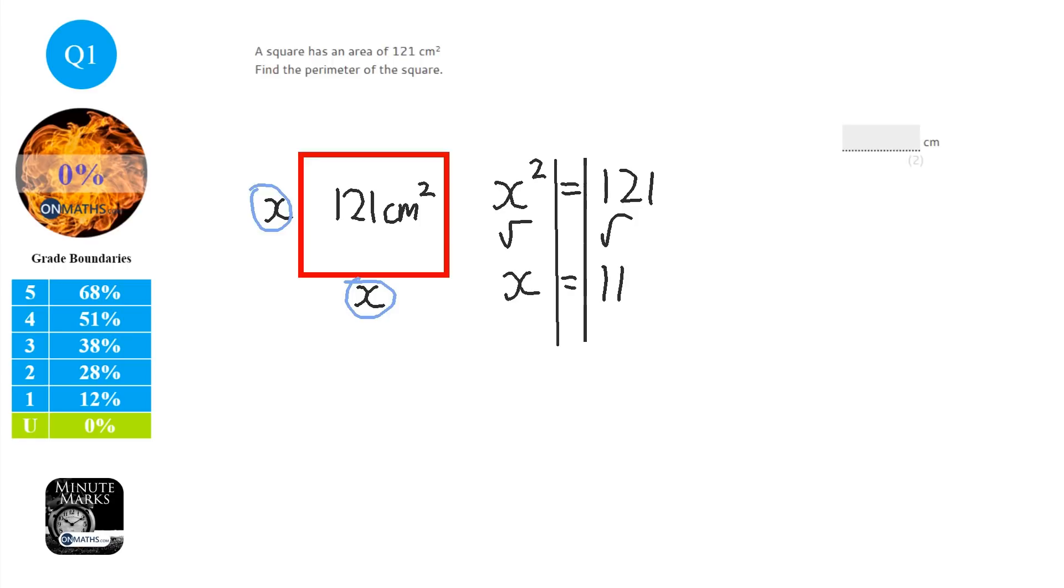So I know that 11 times 11 is 121. Now the temptation is to think, right, I've got the answer 11. But it asks for the perimeter of the square. So I know perimeter is the distance around the square. And each side is 11. So it's 11 plus 11 plus 11 plus 11 or 11 times 4, which is the perimeter, which is 44. So the answer is 44 cm.